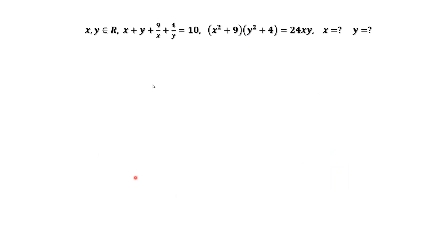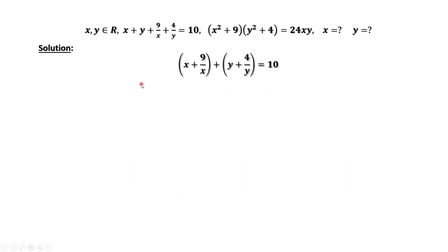From the two given conditions, we rearrange the left-hand side of both conditions. From the first condition, we group the first two terms and group the last two terms. For the second condition, both sides are divided by xy.